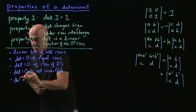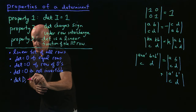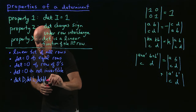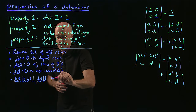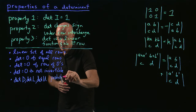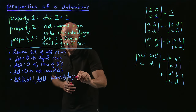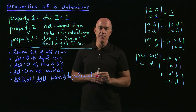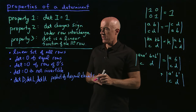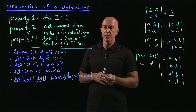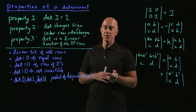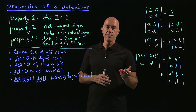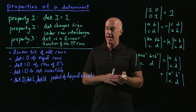The determinant of a diagonal matrix, a lower triangular matrix, or an upper triangular matrix is just the product of the diagonal elements. From a practical point of view, if you can use operations like Gaussian elimination to convert a matrix to upper triangular form, you can then find the determinant simply by taking the product of the diagonal elements.